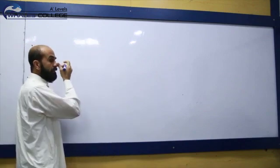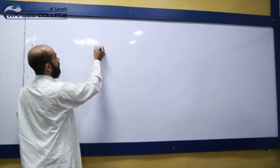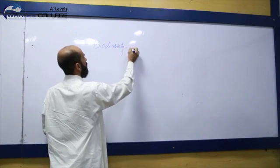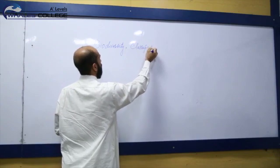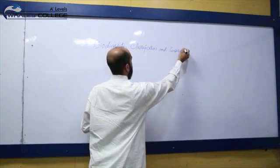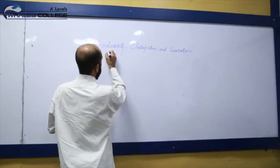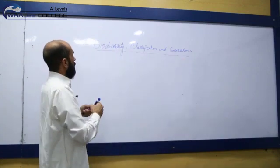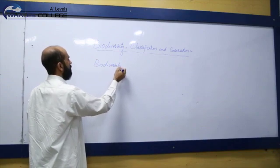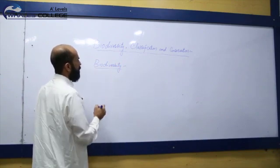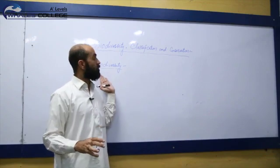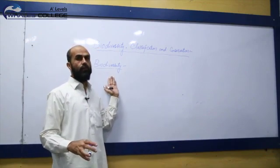Today we are going to discuss the topic biodiversity, classification and conservation. What is meant by biodiversity? Bio means life, diversity means variation, different forms. So biodiversity means various forms of life.